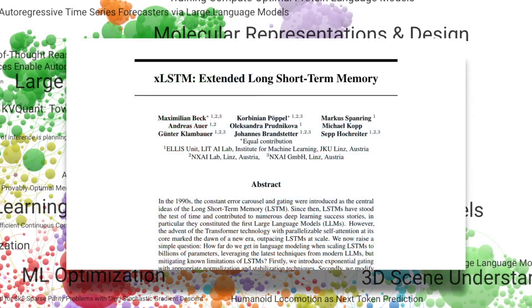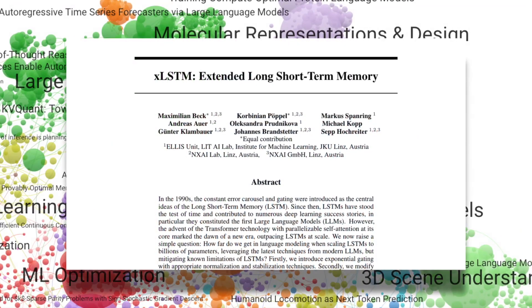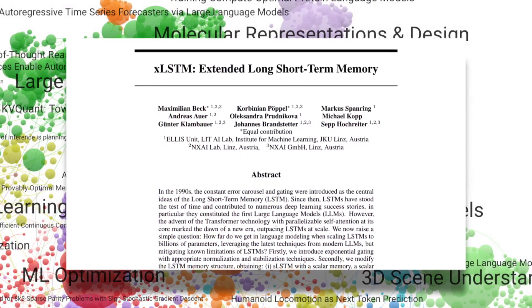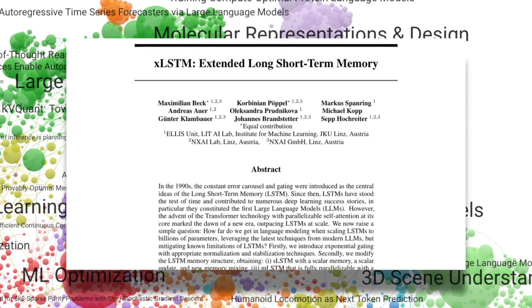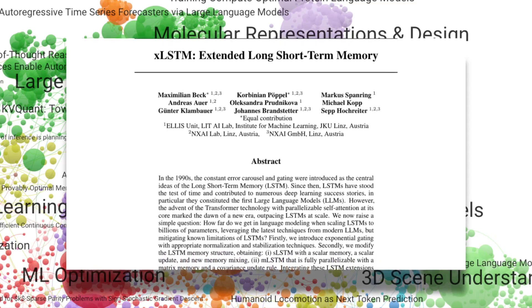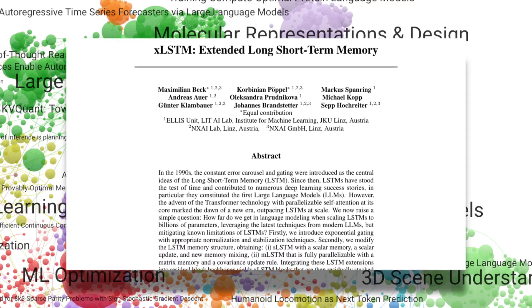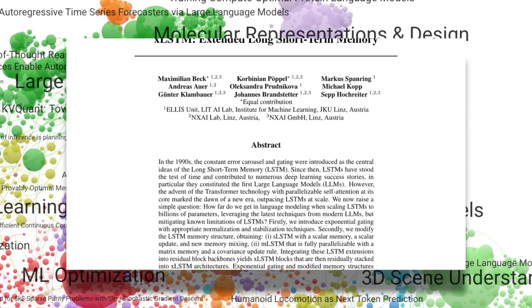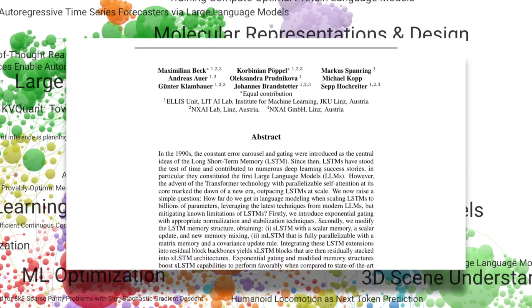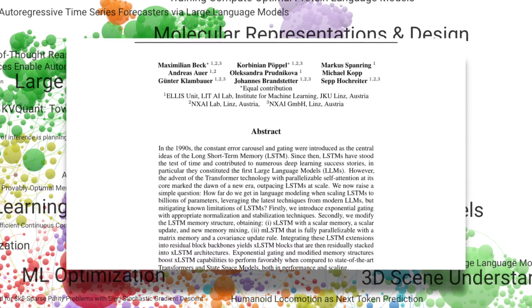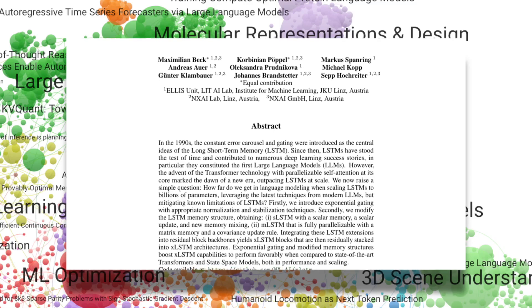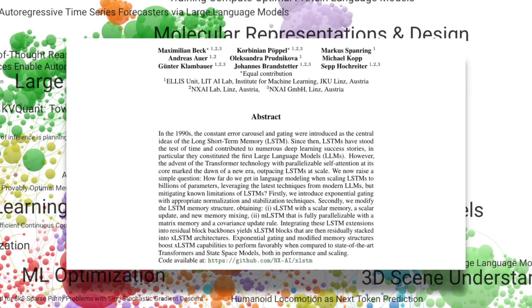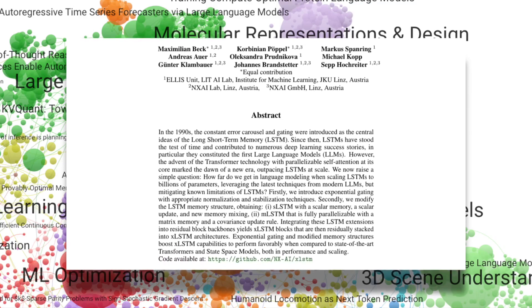For those that seek alternatives to the transformer architecture, XLSTM introduces two variants to address the limitations of traditional LSTMs. The sLSTM uses scalar memory and exponential gating, while the mLSTM employs matrix memory and a covariance update rule, enabling better parallelization. These models outperform modern alternatives like transformers and state-space models, particularly in scaling and efficiency, making them a noteworthy contender in language modeling.